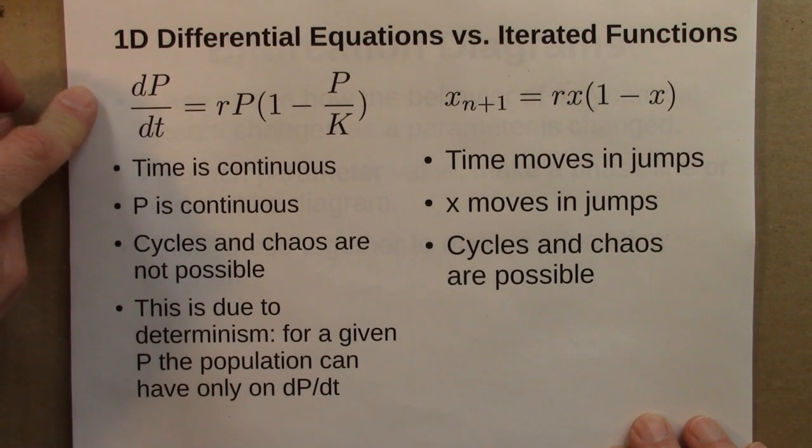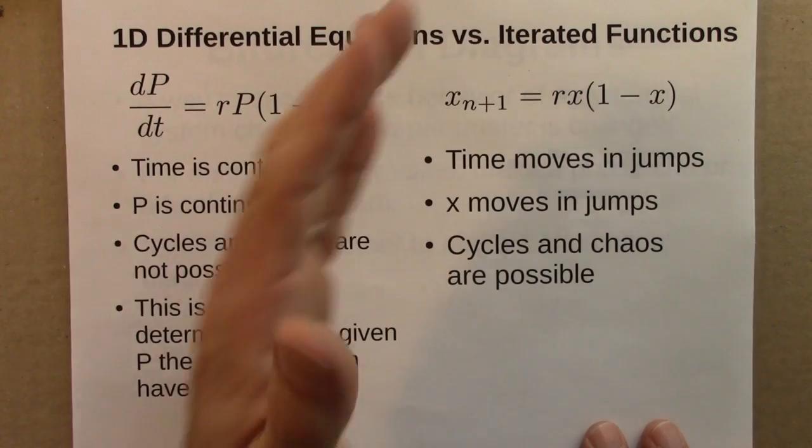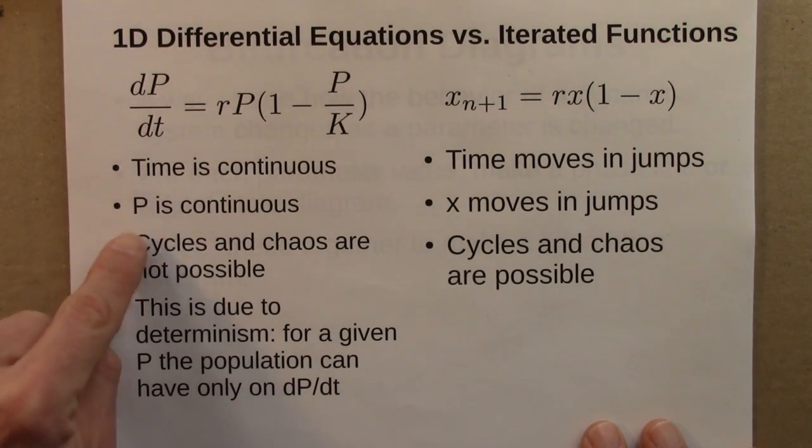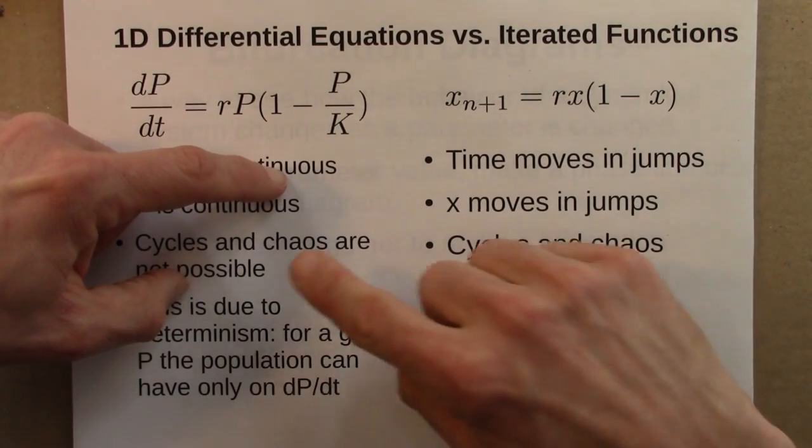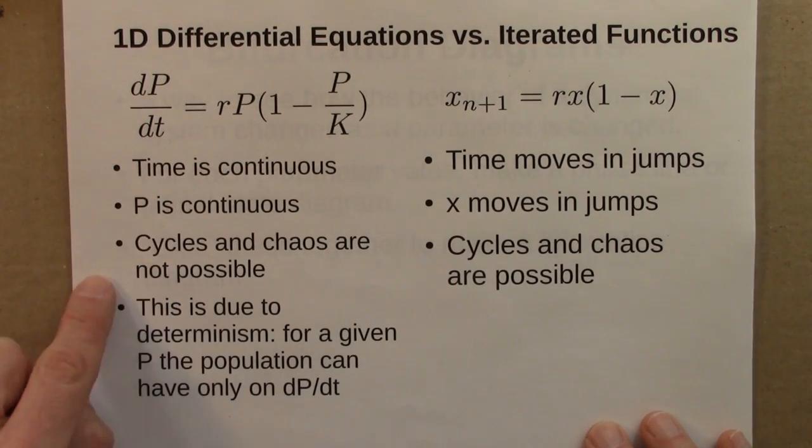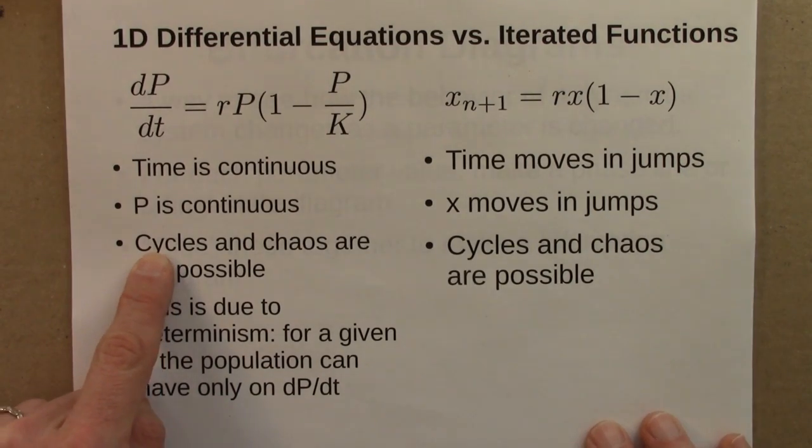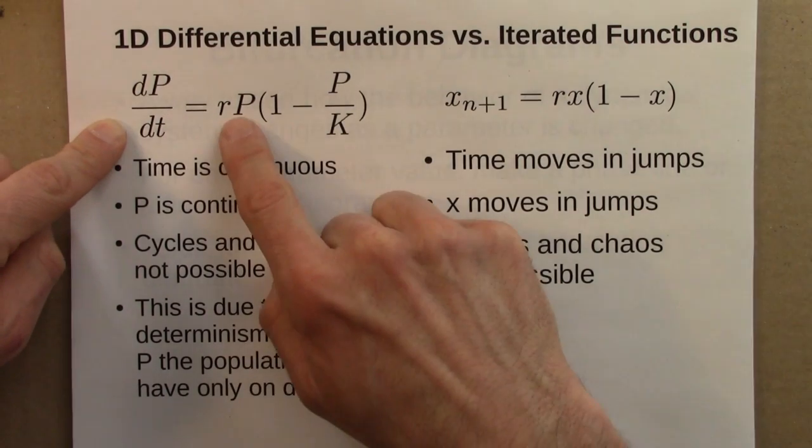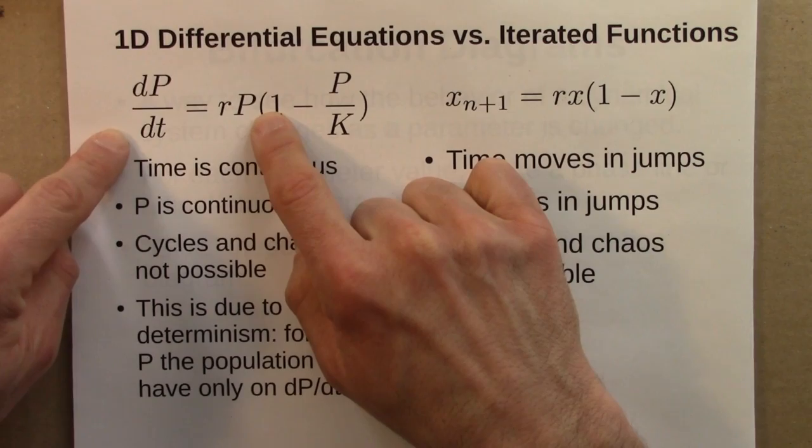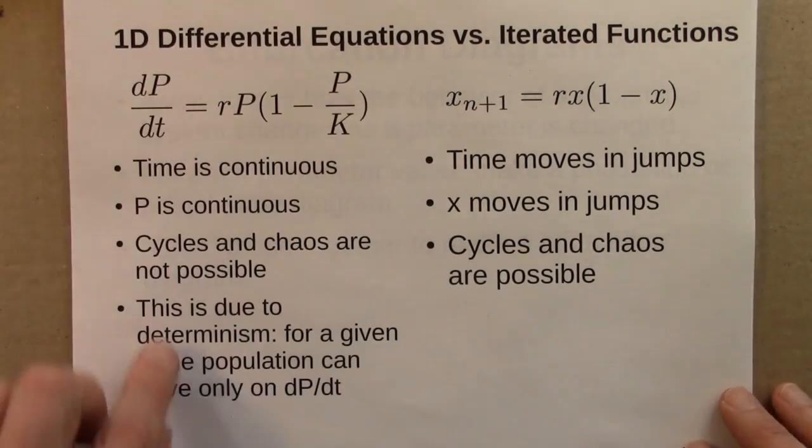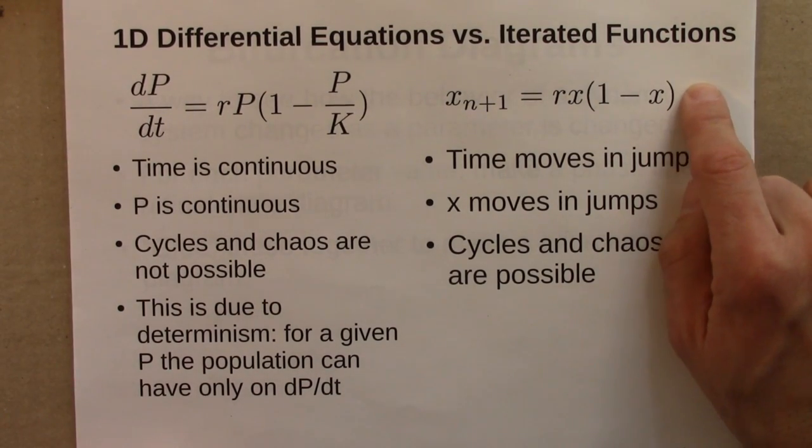One dimensional differential equations are different. Time is continuous. Here this was a population and it had a value at every instant in time. Time doesn't blink from one step to another. It's flowing continuously. Likewise, the presumption here is that p is continuous as well. If you see a p of 50 and a little while later a p of 100, you know that it has to have gone through all intermediate values between 50 and 100. Because of this, coupled with this requirement that these systems are deterministic, means that not only is chaos not possible, but even a cycle isn't possible. Because the rate of change of p, if it's increasing or decreasing, depends only on the population. So it would be impossible to have a cycle because that would mean for a given population, you would have to be both increasing at some times and decreasing at others. Determinism and this continuity limit the range of behaviors we can see in one dimensional differential equations, but not in one dimensional iterated functions.